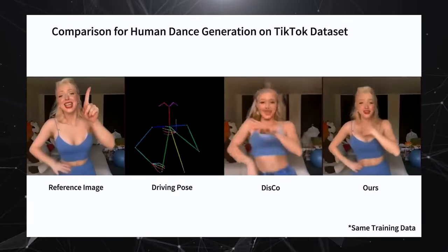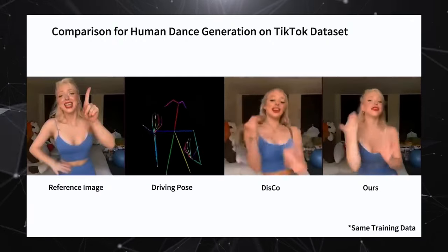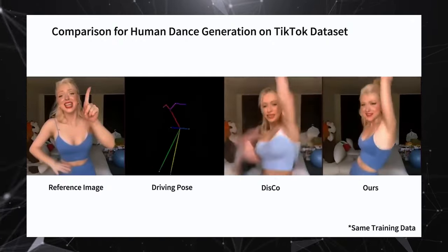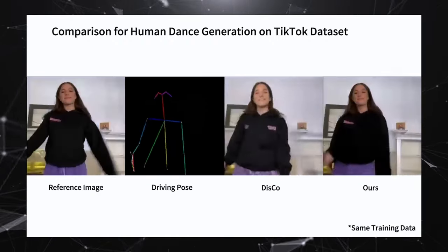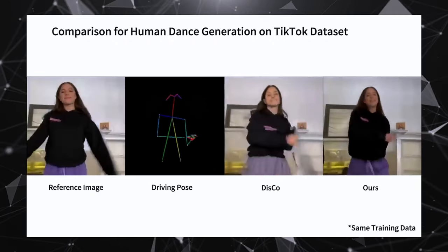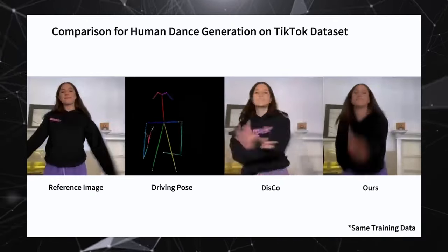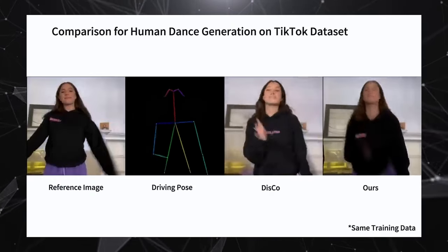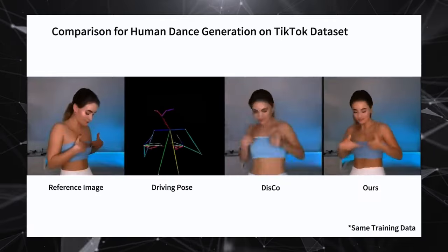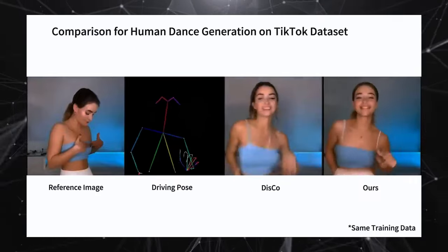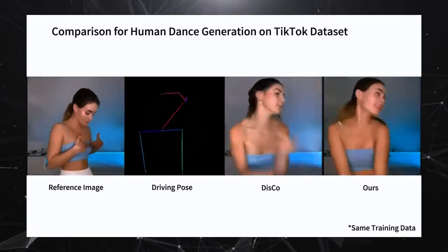In the dance-off between Disco and Animate Anyone, it's a comparison of a smooth tango versus a chicken attempting the cha-cha. Disco fumbles with pose control, color confusion, and inconsistent details, resembling dance moves after too much coffee. Meanwhile, the method used by Animate Anyone is the Fred Astaire of the AI dance floor, leaving Disco struggling to keep up with the rhythm.